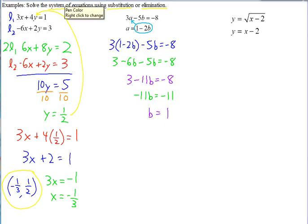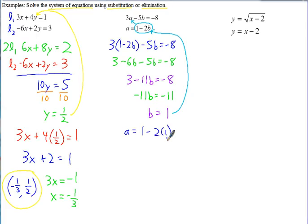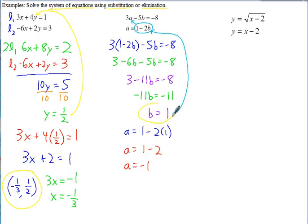To find a, plug b equals 1 into the isolated equation: a equals 1 minus 2 times 1, which is 1 minus 2, so a equals negative 1. Since these aren't x and y, we just leave the answer as a equals negative 1 and b equals 1.